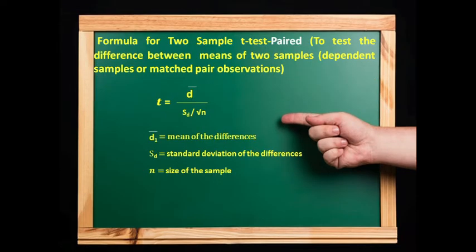Formula for two-sample paired T-test: used to test the difference between means of two dependent or matched-pair samples. The formula is T = D̄ / (S_D / √n), where D̄ is the mean of the differences, S_D is the standard deviation of the differences, and n is the sample size.